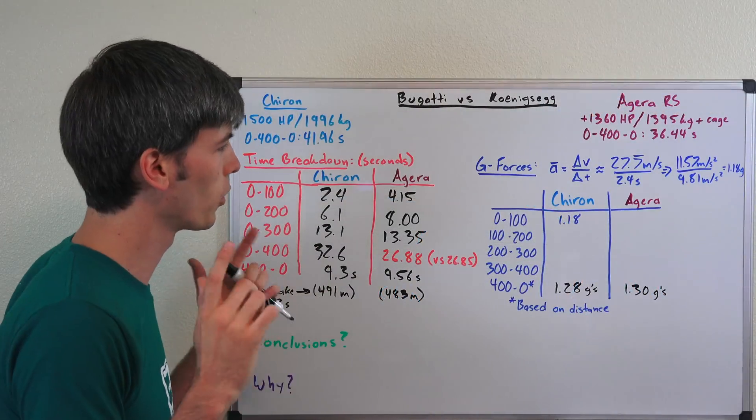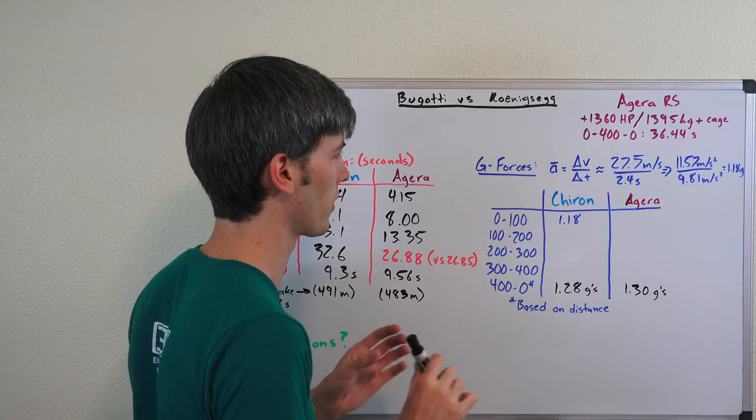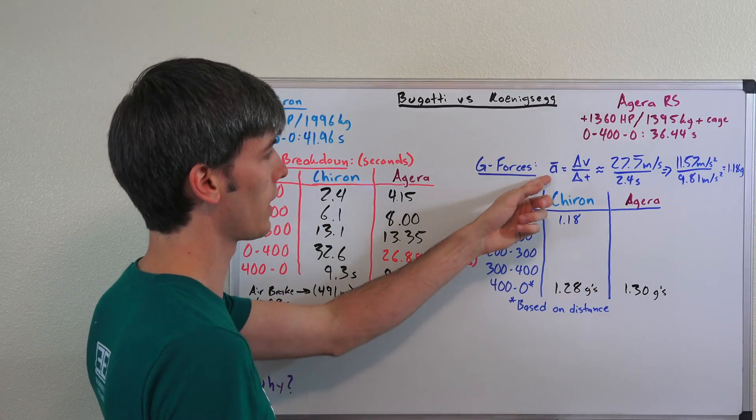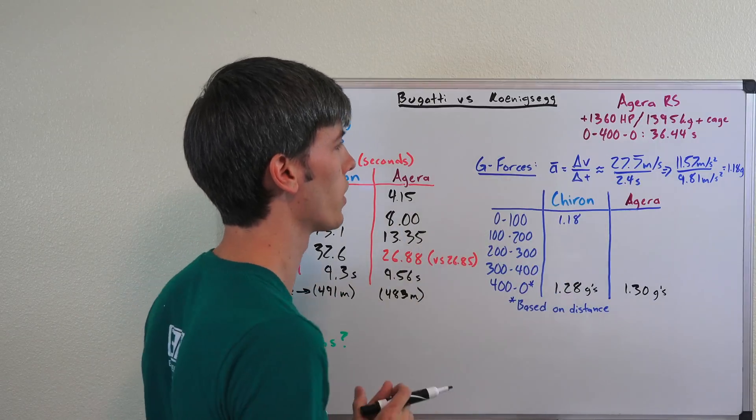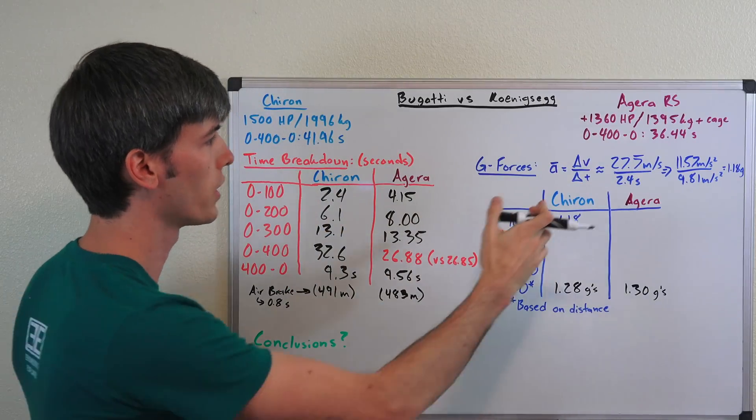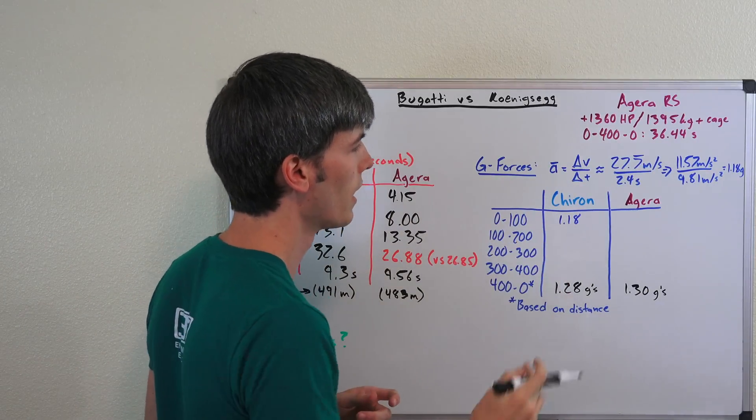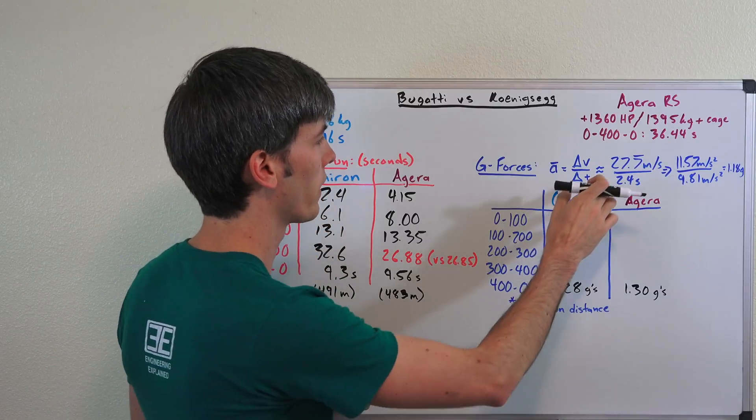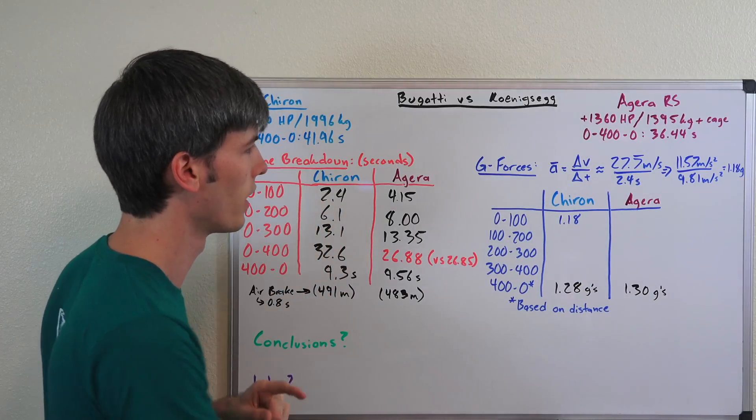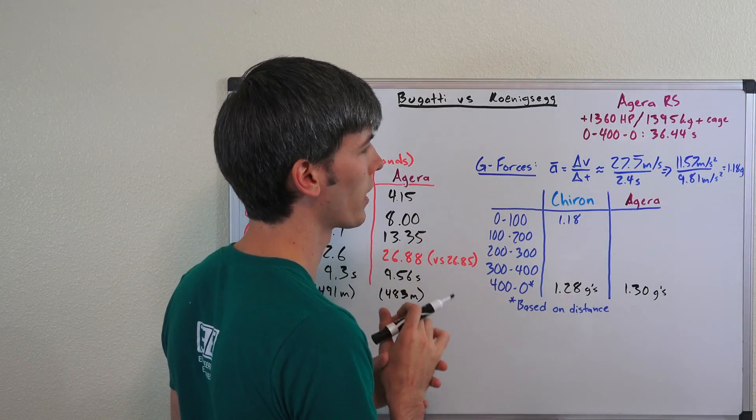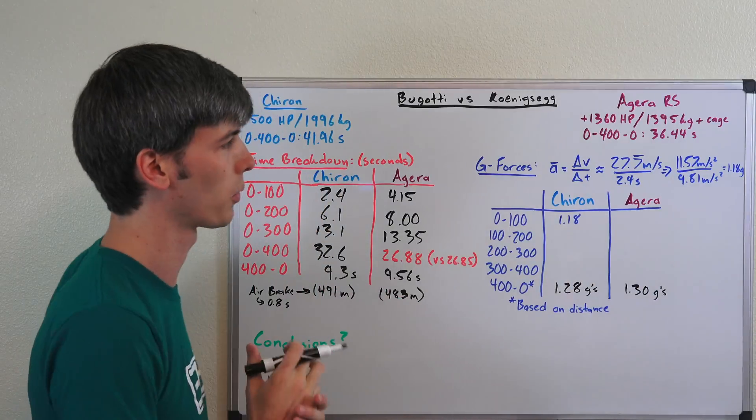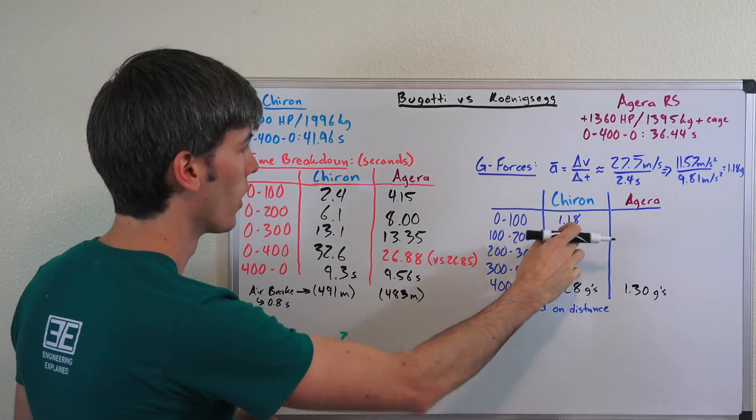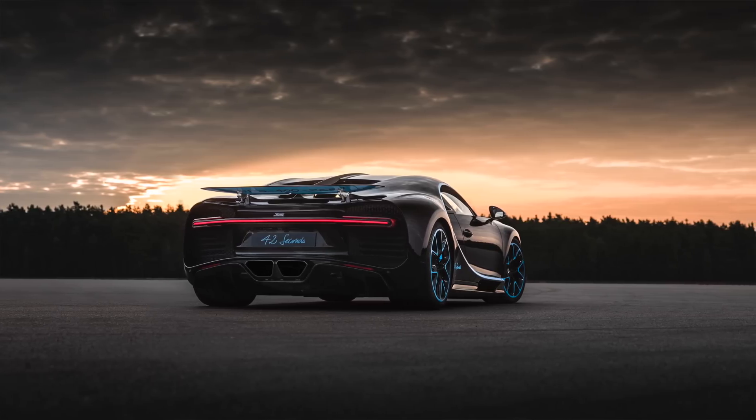Now something I thought would also be interesting to do was to analyze the g-forces of these accelerations. We're going to use this as our example: 0 to 100 kilometers per hour. Acceleration, the average acceleration is equal to the change in velocity divided by the change in time. Our change in velocity is 100 kilometers per hour for this segment, 27.7 meters per second, that's the same as 100 kilometers per hour. We're dividing that by our change in time, which is 2.4 seconds. That gives us 11.57 meters per second squared. We divide that by gravity 9.81 meters per second squared, and that gives us our acceleration of 1.18 g's for the Bugatti Chiron from 0 to 100 kilometers per hour.